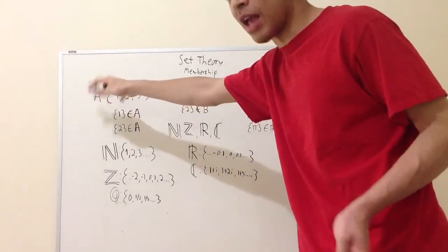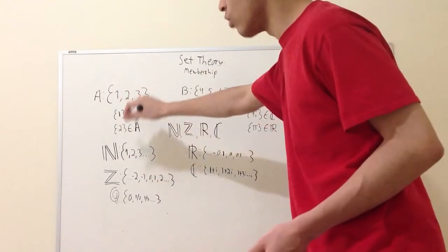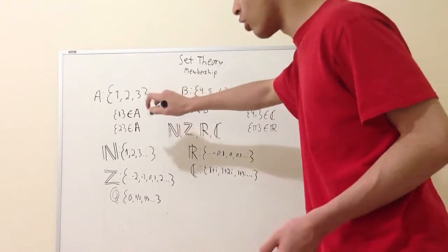Usually you just write the name of the set, which is typically a letter, and you have curly braces with elements inside the curly braces. So one, two, and three,